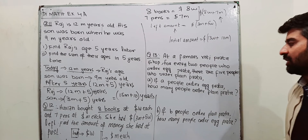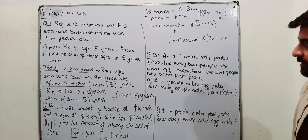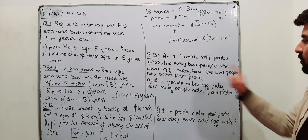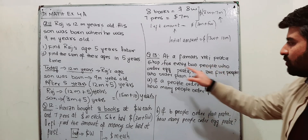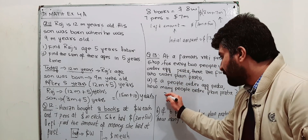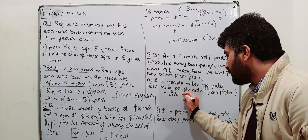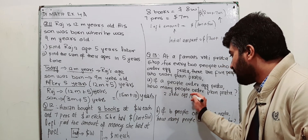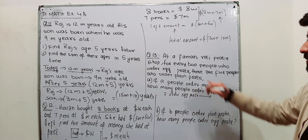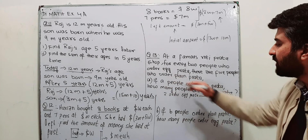Question number 13 says: at a famous roti pratha shop, for every 2 people who order egg pratha, there are 5 people who order plain pratha.